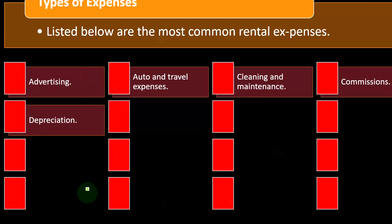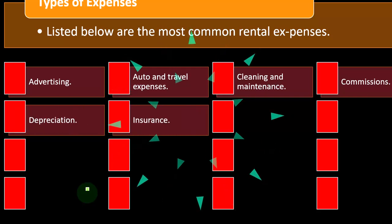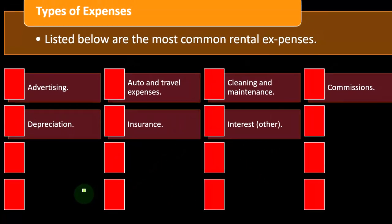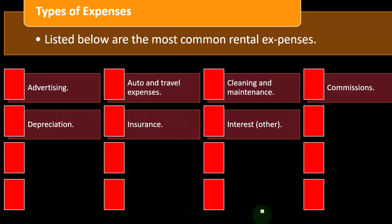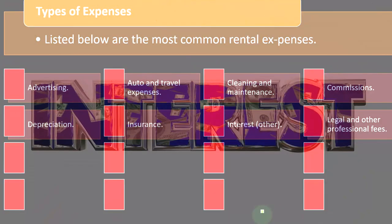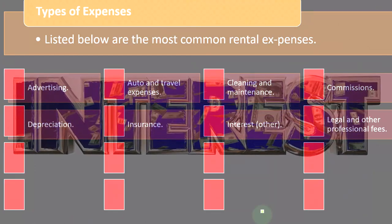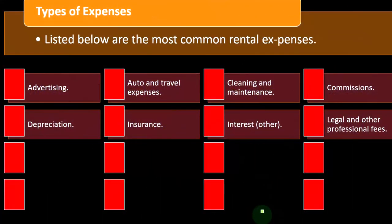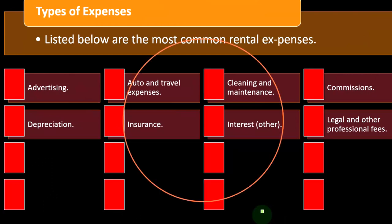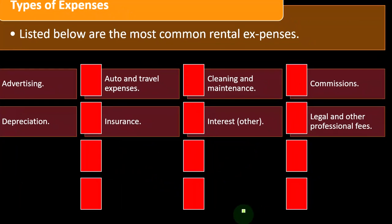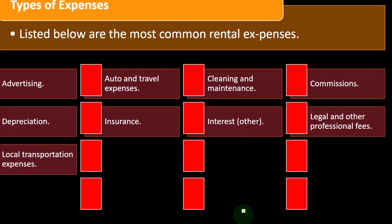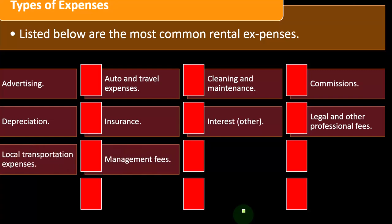Cleaning and maintenance clearly could be a component. Commissions are listed as well. Depreciation is a big one because the rental property itself is a huge cost, and depreciating that cost becomes important. Insurance is a common business-type expense. Interest is also relevant — there could be a loan, and that loan was necessary to get the capital to have the rental property, so the interest on that loan would be business-related.